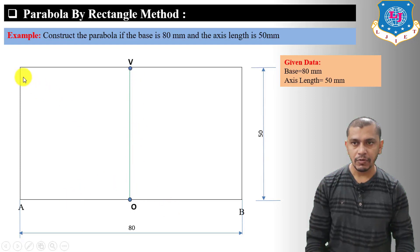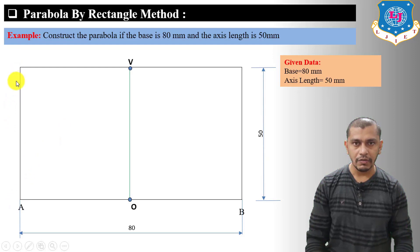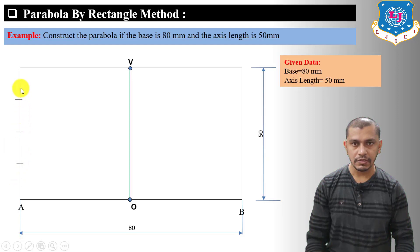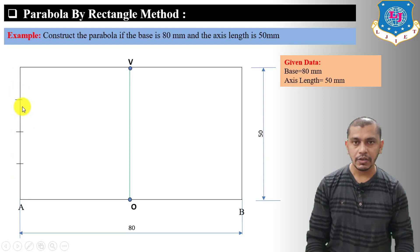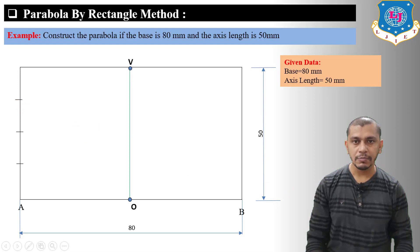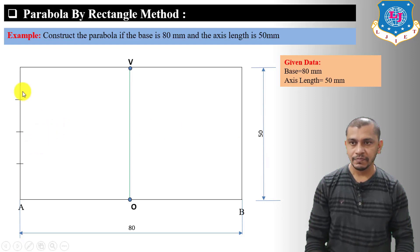Now divide the side of the rectangle into equal number of divisions — let's say four equal divisions: one, two, three, and four. You can use a scale or the inclined line method to divide the line. If you want to know how to divide a line into equal divisions, watch my video on geometric construction — the link is in the description.